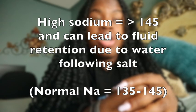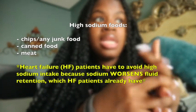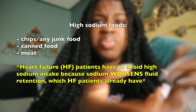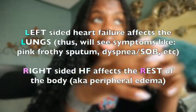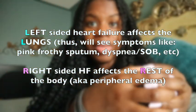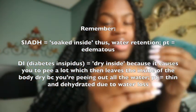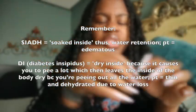High sodium causes fluid retention. Patients with heart failure — especially right-sided — must avoid high-sodium foods like chips, canned foods, and meats, as these worsen peripheral edema. Water follows sodium, which increases fluid retention, though exceptions exist with conditions like SIADH and diabetes insipidus.